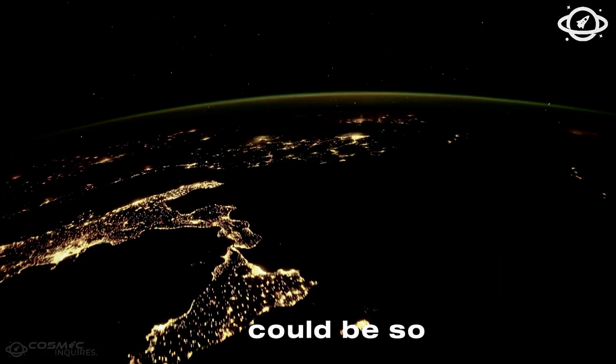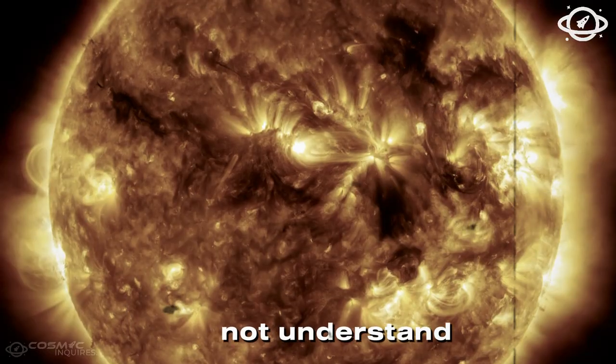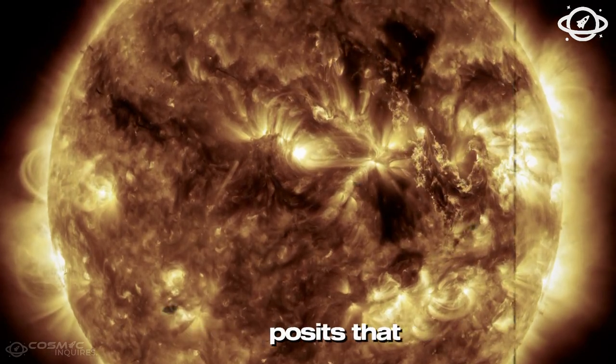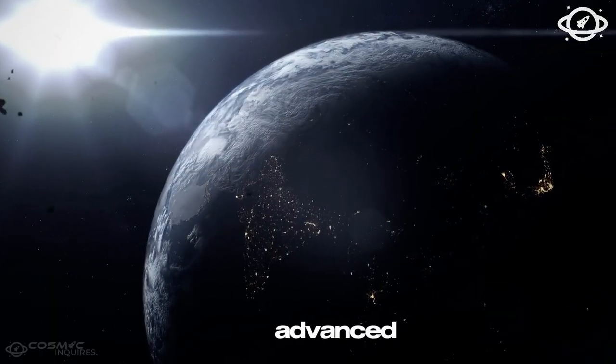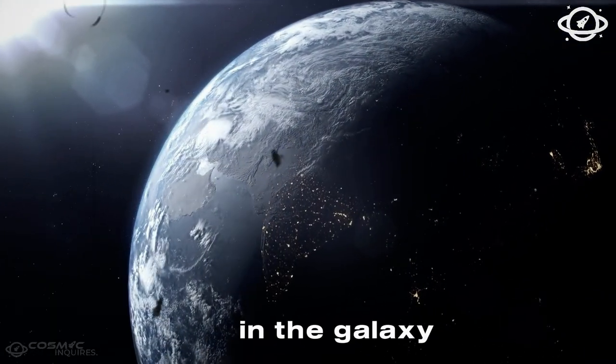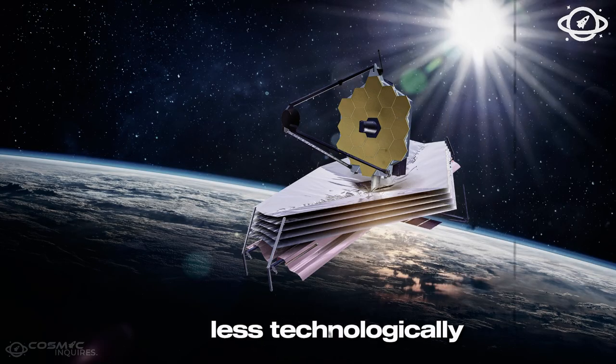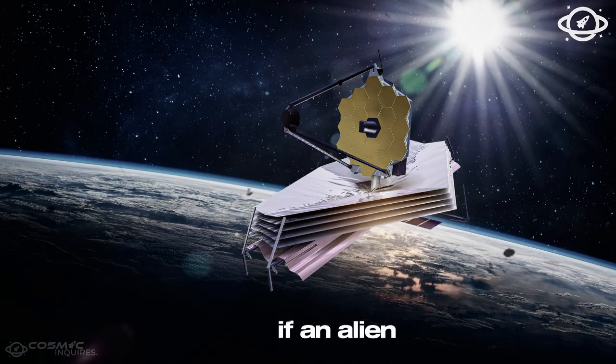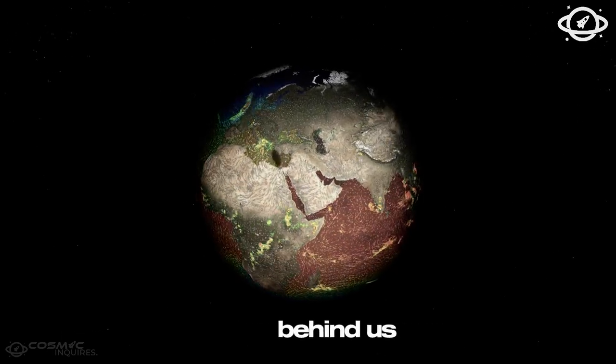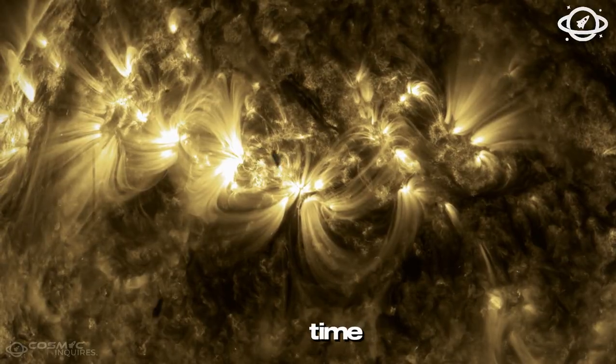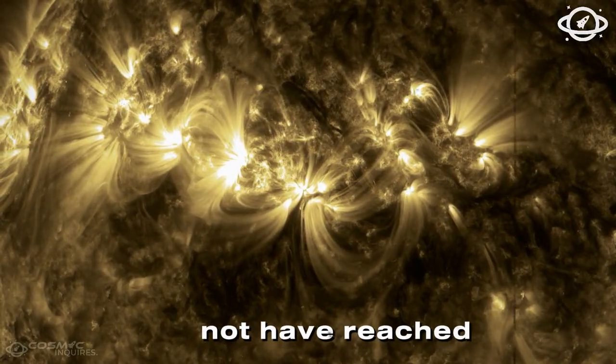Another hypothesis posits that humanity might be one of the most advanced civilizations in the galaxy, and other civilizations are simply less technologically developed. If an alien species is just a century behind us, they may have only been transmitting signals for a short time, and those signals may not have reached Earth yet.